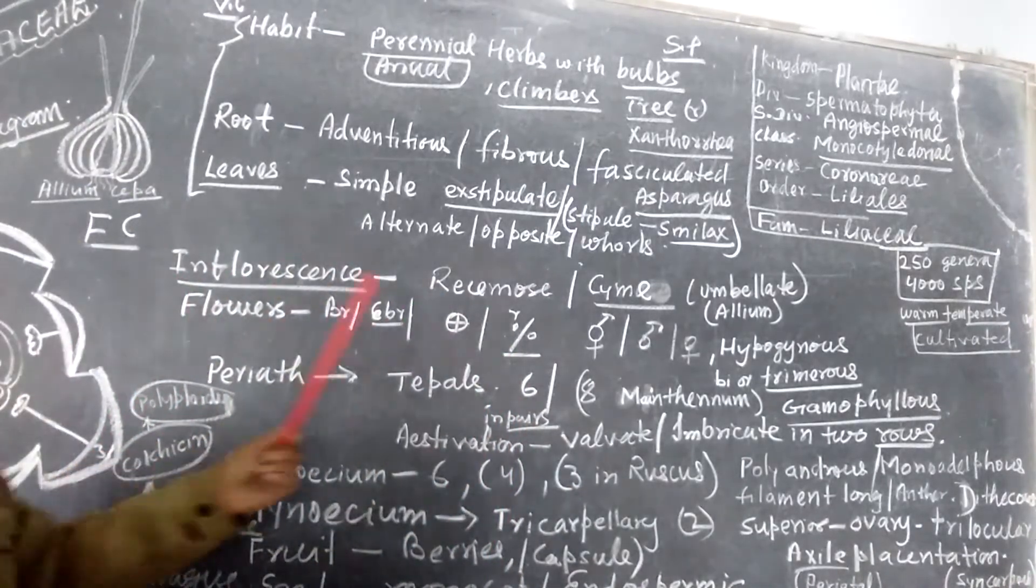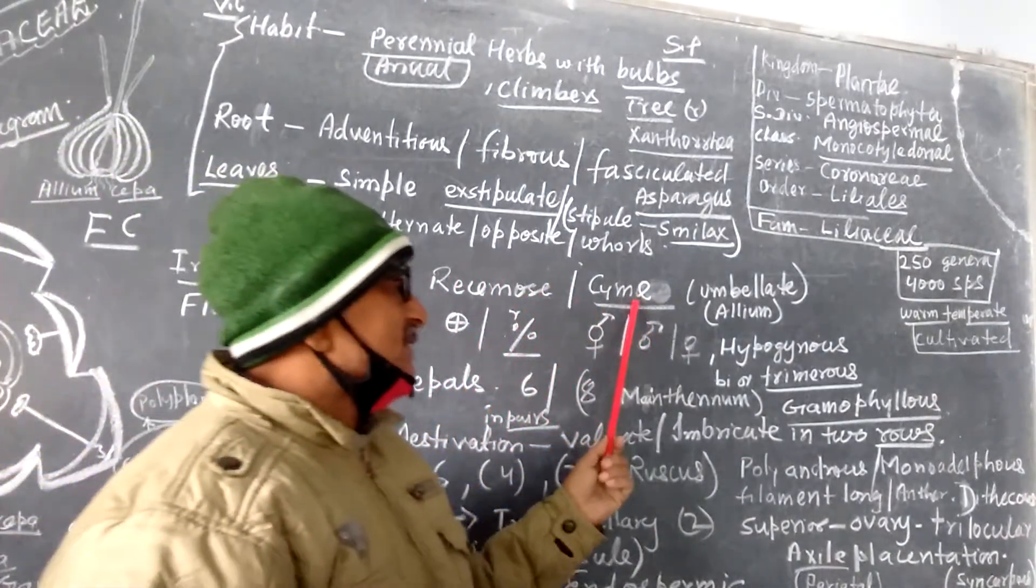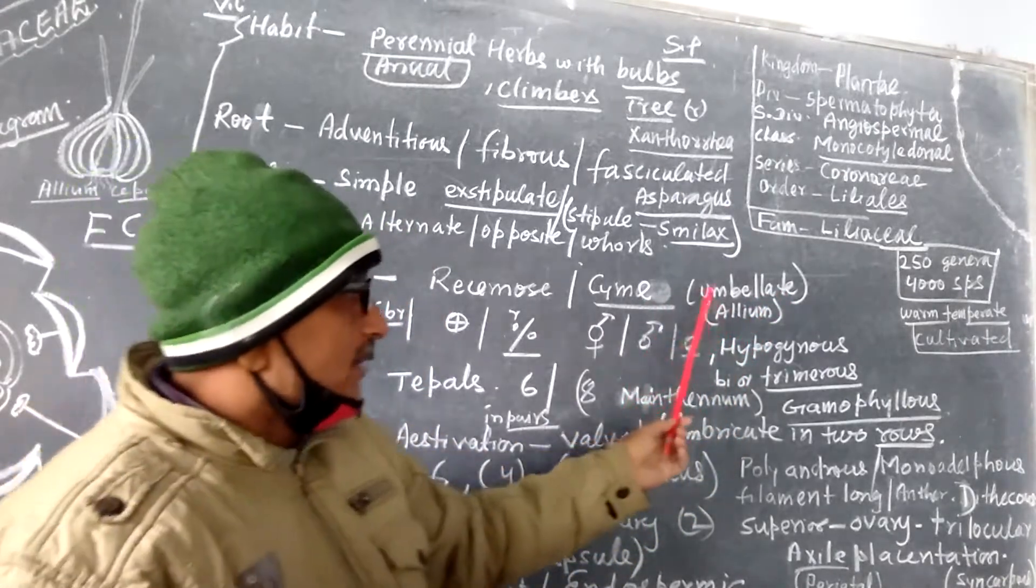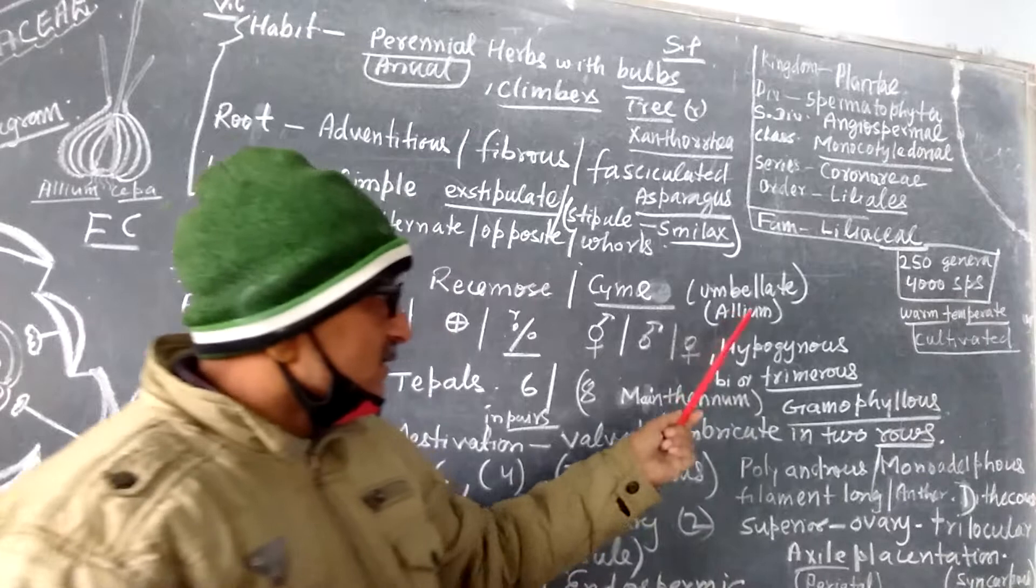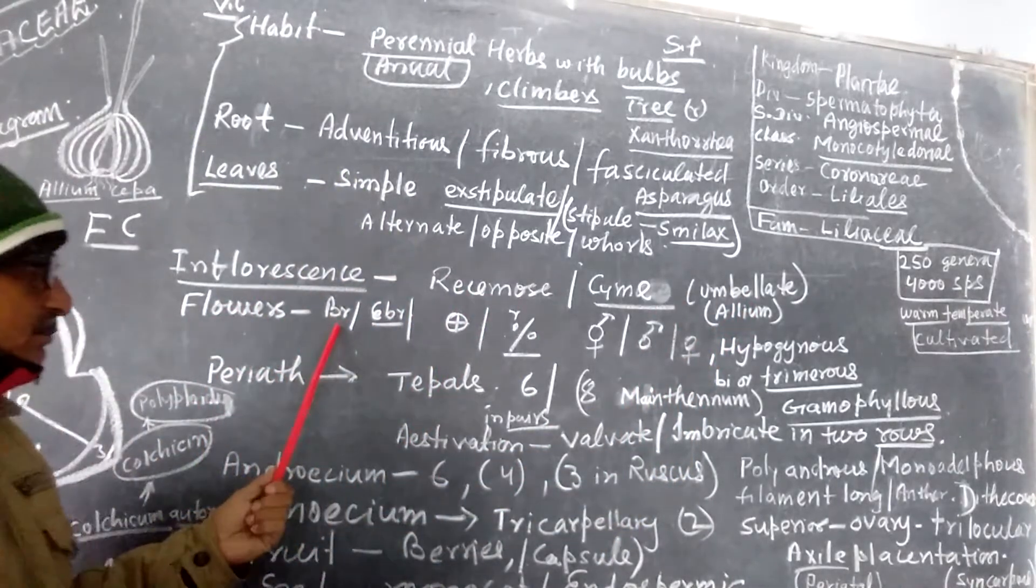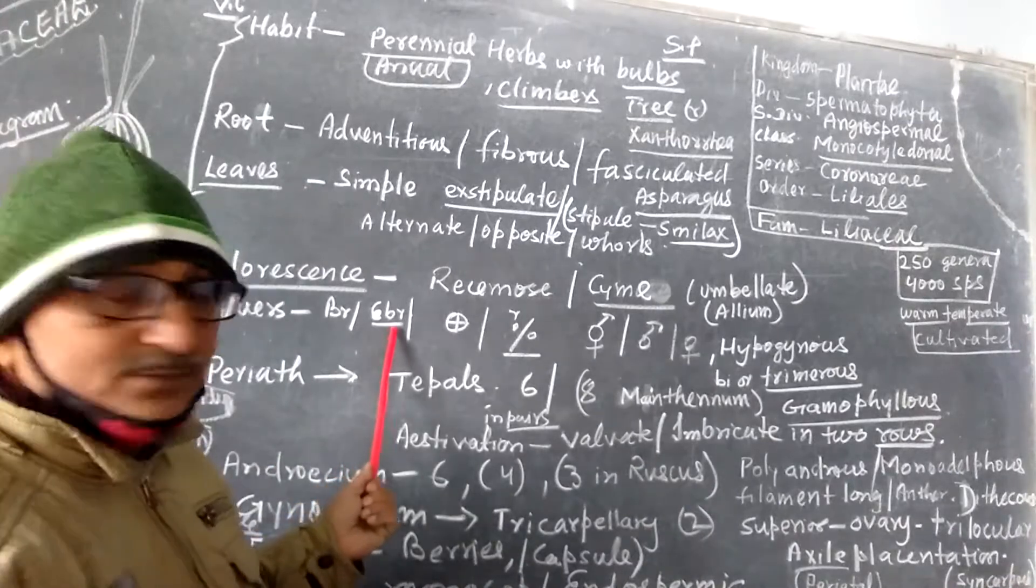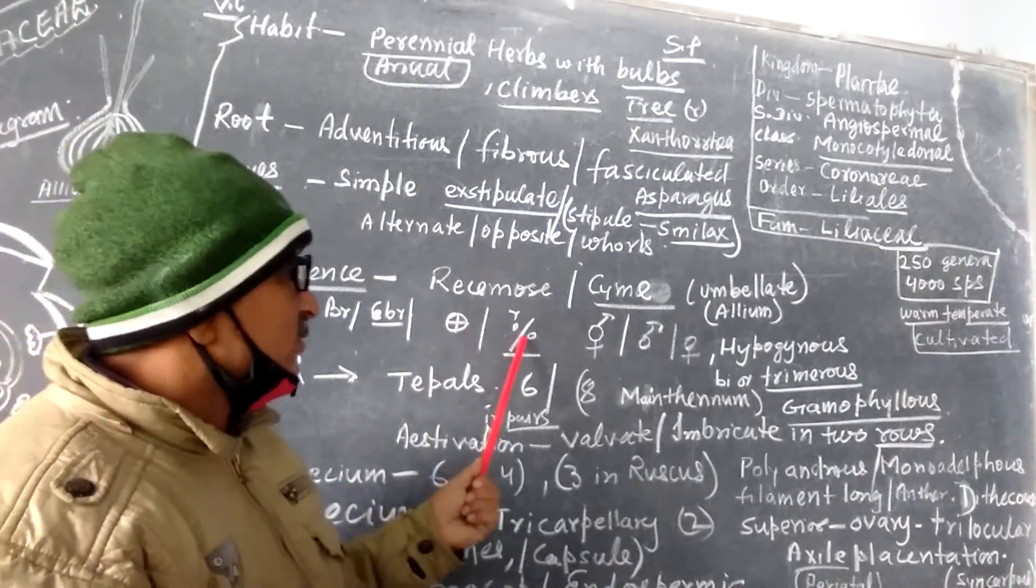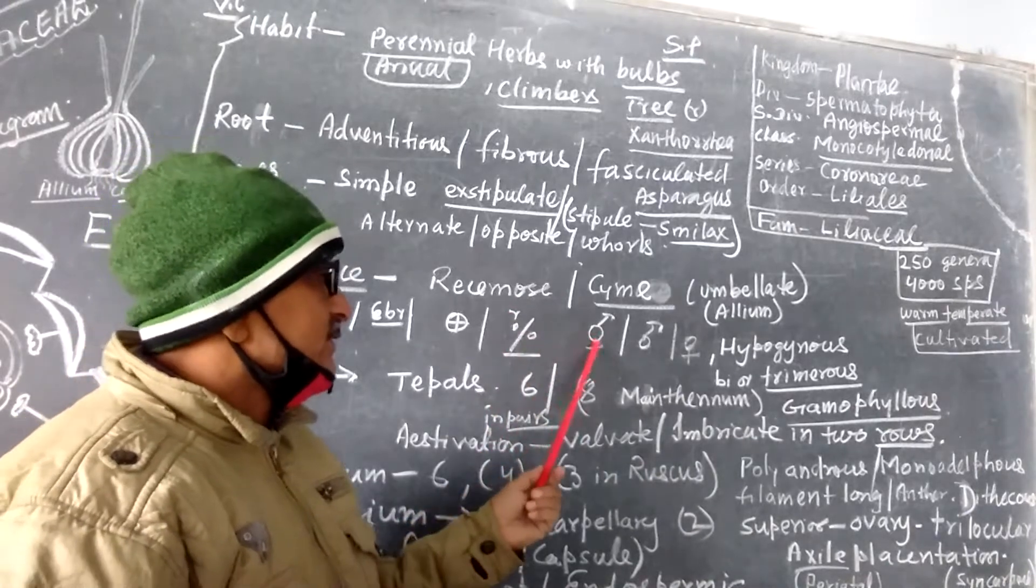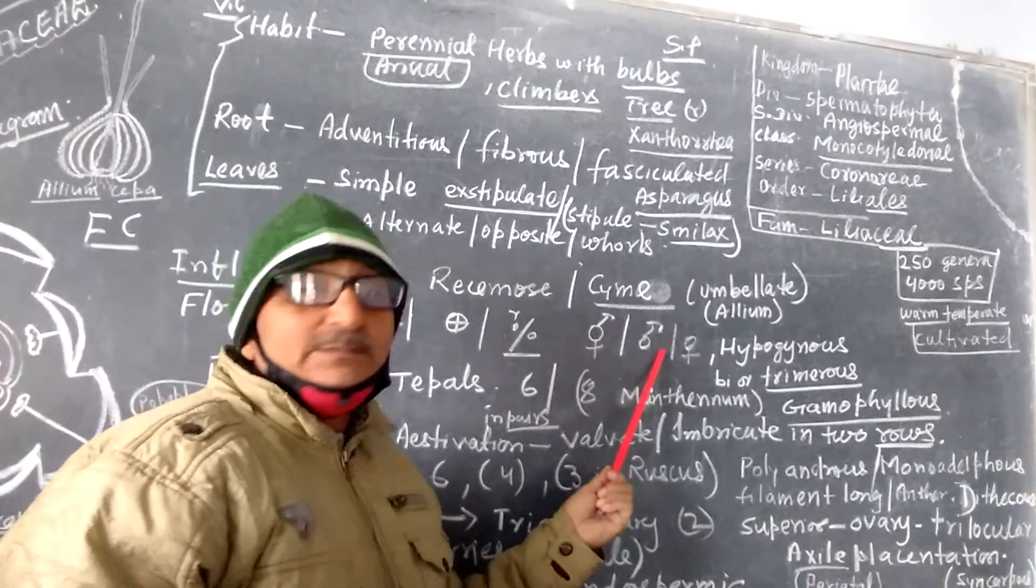When we come to the floral characters, the inflorescence is racemose or sometimes cymose umbellate. Flowers are bracteate or ebracteate, both. Actinomorphic or sometimes zygomorphic too, rarely zygomorphic. Bisexual or sometimes unisexual too.